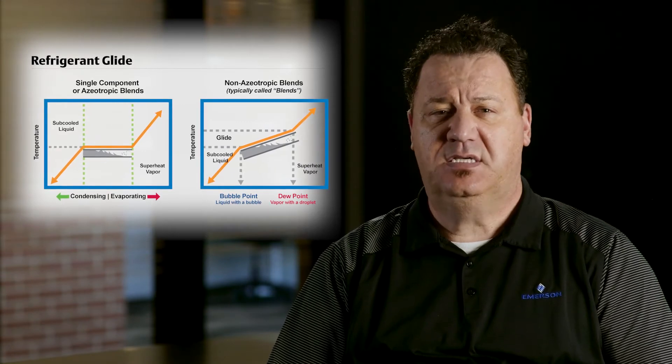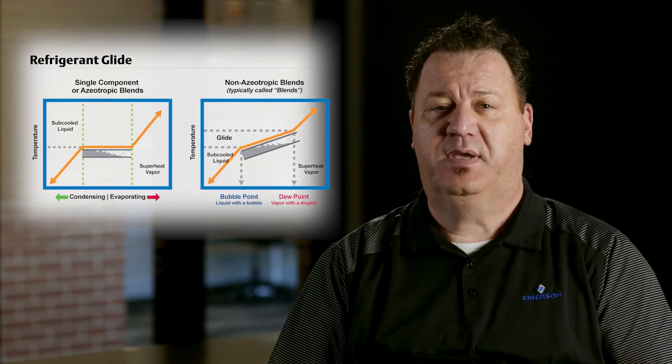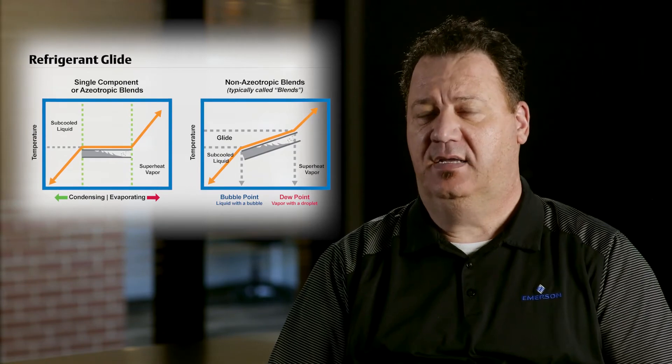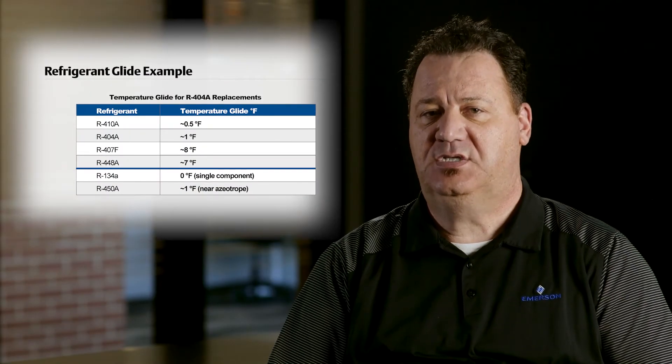An azeotropic blend has minimal Glide. A good example for that would be R410A — it has less than half a degree of Glide, which is non-significant.